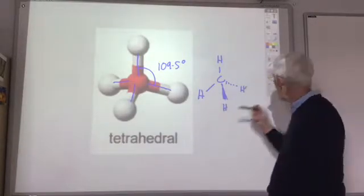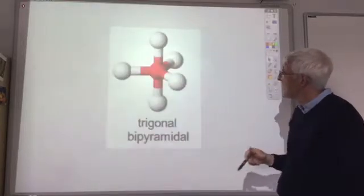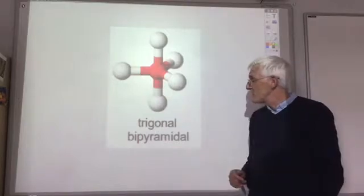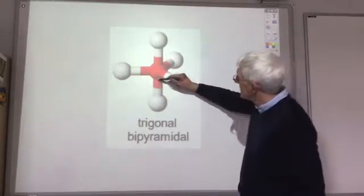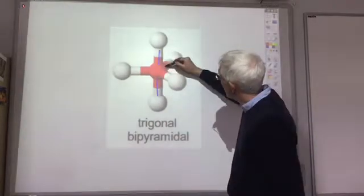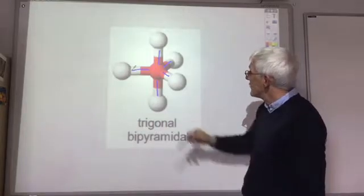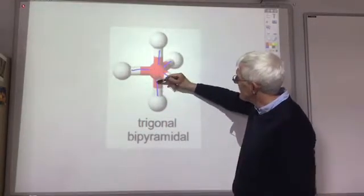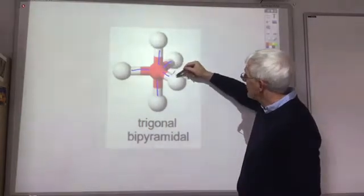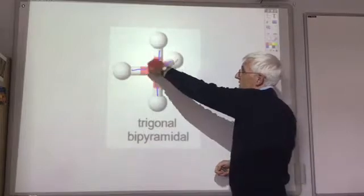Okay, if we move on to having five electron pairs, we end up with this trigonal bipyramidal shape. So we've got one, two, three, four, five different electron pairs. So the angle between this one and this one is 90 degrees. And between the ones lying flat in the plane, they are 120 degrees apart.